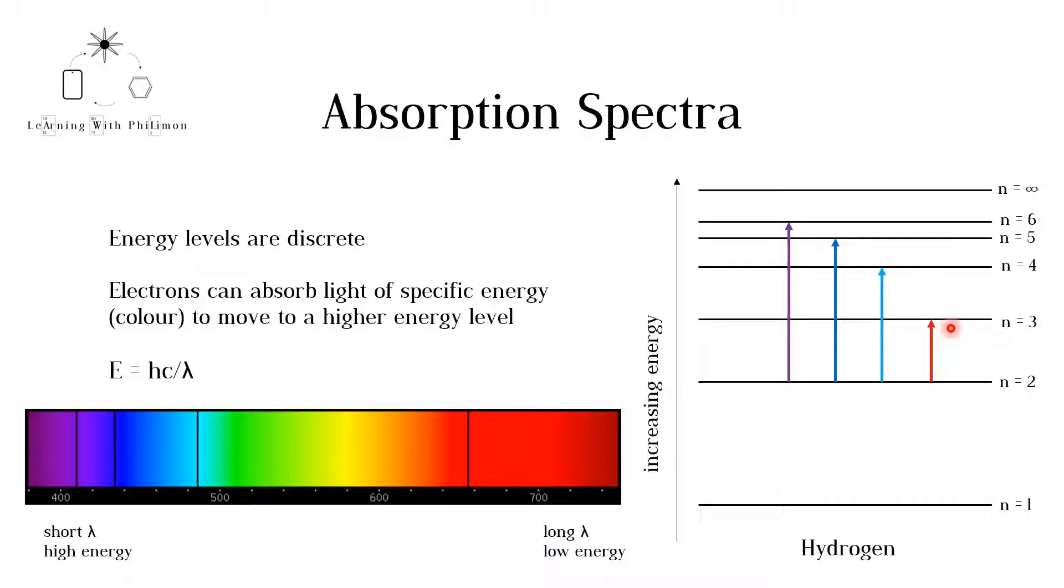To understand absorption and emission spectra, we need to have a basic understanding of light. Visible light consists of different colors with different wavelengths. Here we see the full spectrum: red, orange, yellow, green, blue, violet.